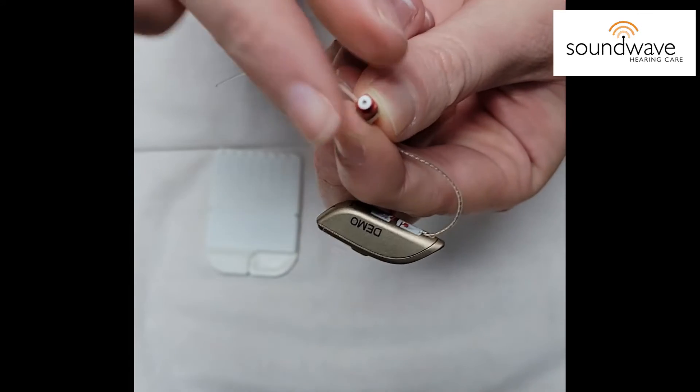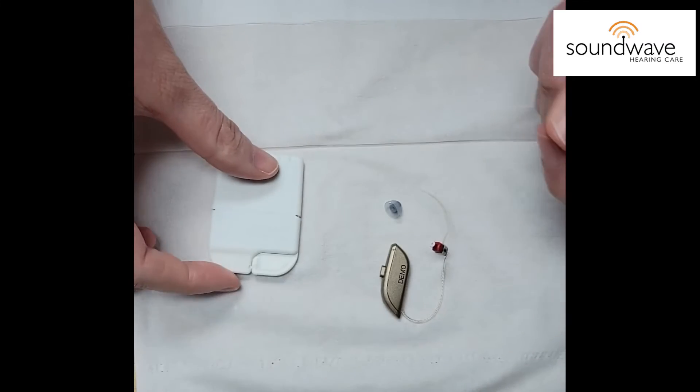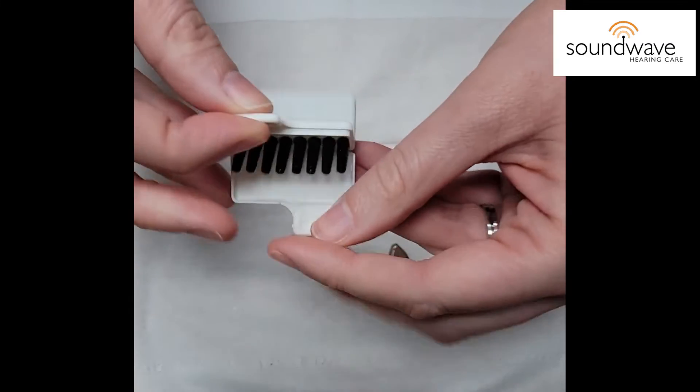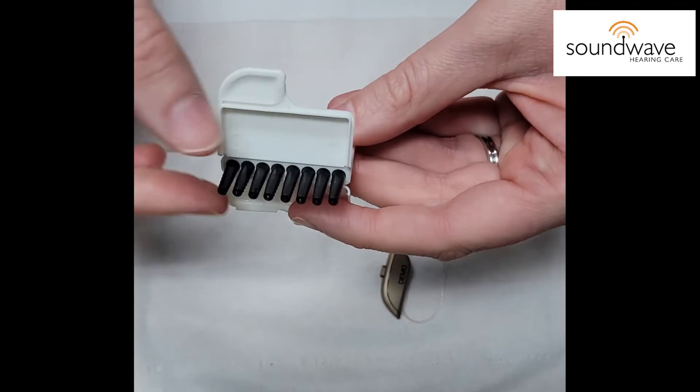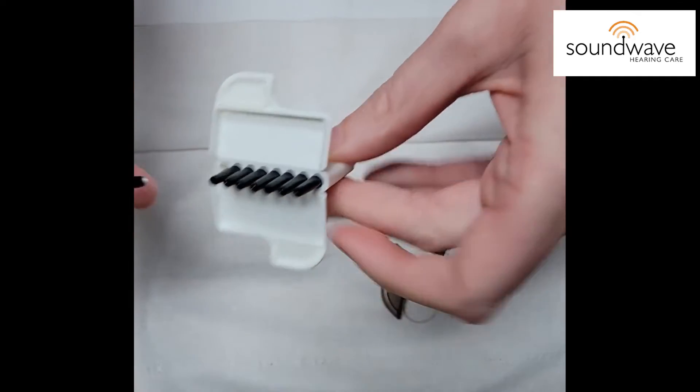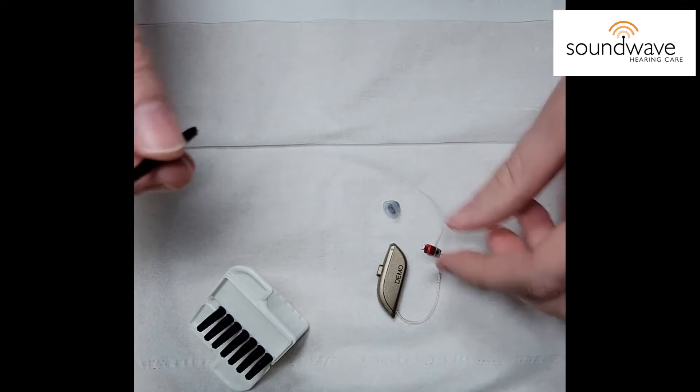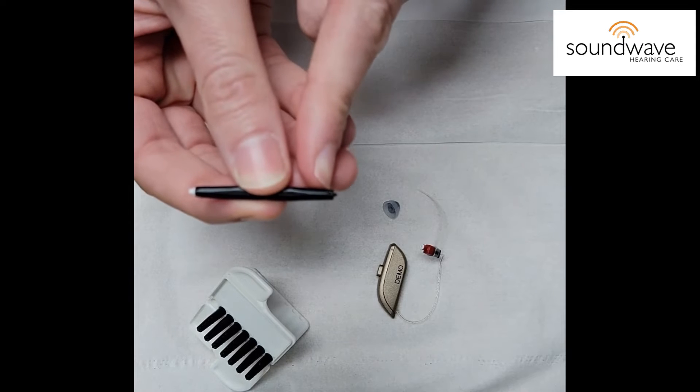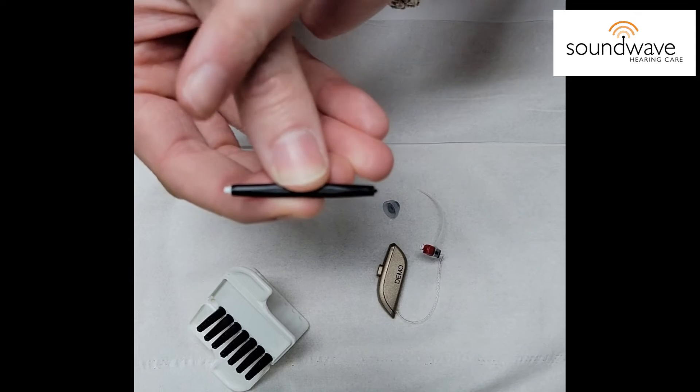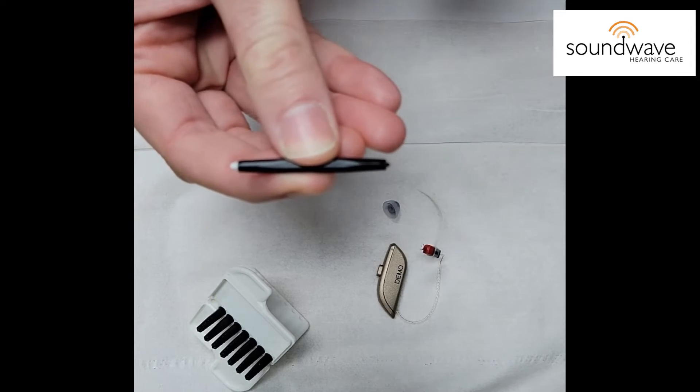So to replace this you're going to take your wax guards and here you have some replacements. You're going to just take one of these little black sticks out of the case and what you may see is a little sharp end on one side and a replacement filter on the other.